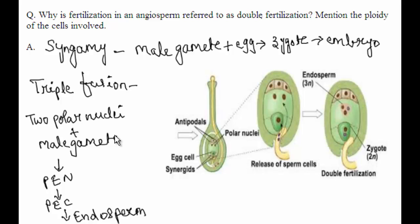Syngamy is called generative fertilization, whereas triple fusion is called vegetative fertilization. Inside the embryo sac, two types of fertilization occur — syngamy and triple fusion — and that is why fertilization in angiosperms is referred to as double fertilization.